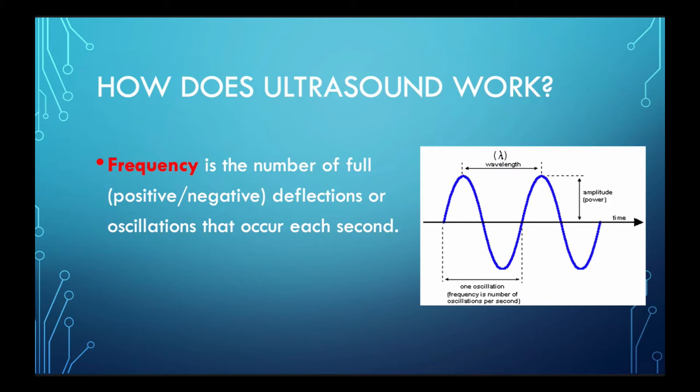In ultrasound, the wavelength refers to the length of one cycle, or one complete negative and positive pressure change. The frequency is the number of sound wave oscillations per second, measured in hertz. To put it in perspective, human hearing can detect sound waves in the range of basically 20 hertz, or 20 oscillations per second, to about 20 kilohertz, or 20,000 cycles per second. When we're using ultrasound, images are generally produced using sound waves in the range of between 1.6 and about 10 megahertz — 10 million oscillations per second — so much, much higher frequency.